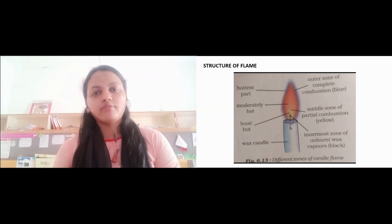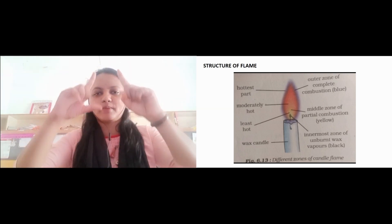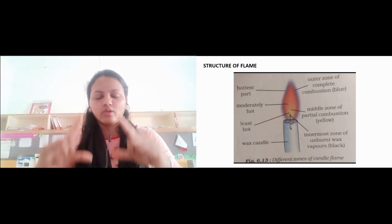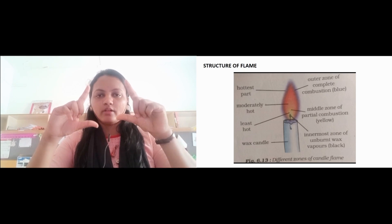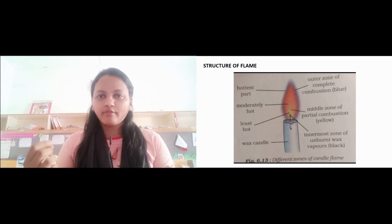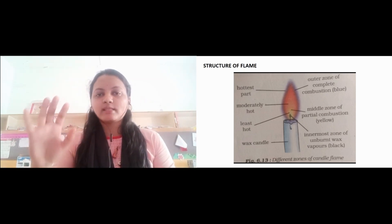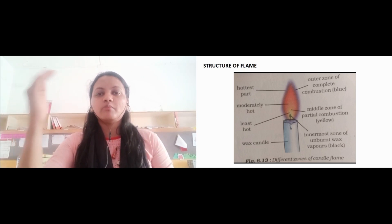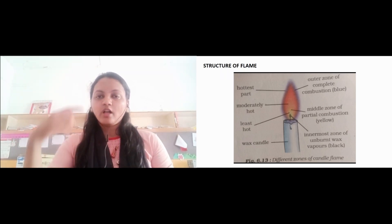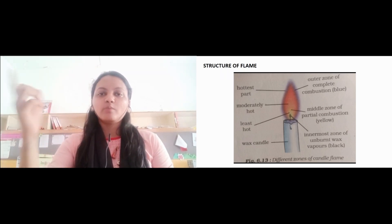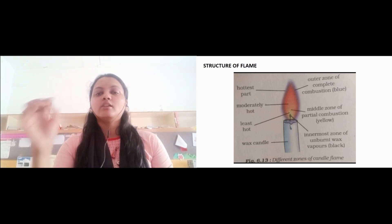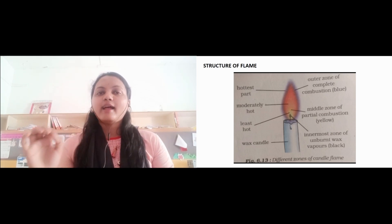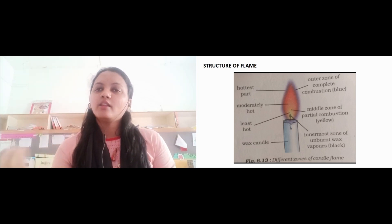The innermost zone is unburnt wax. The candle is made up of wax. These are the different zones: the outermost zone, the middle zone, and the innermost zone. Outermost zone is blue in color, middle zone is yellow in color, and the innermost is unburnt wax.